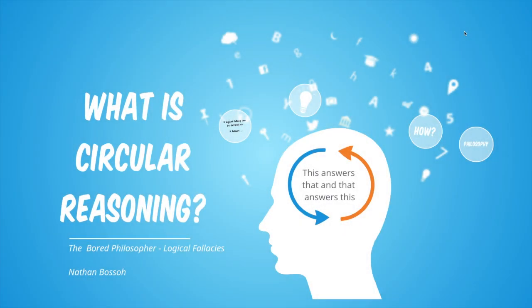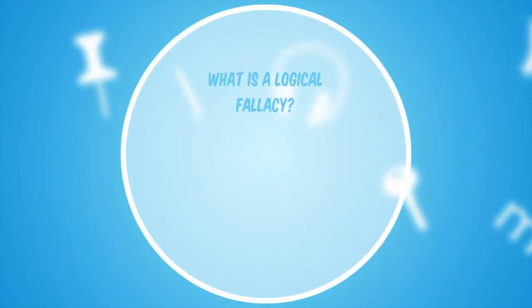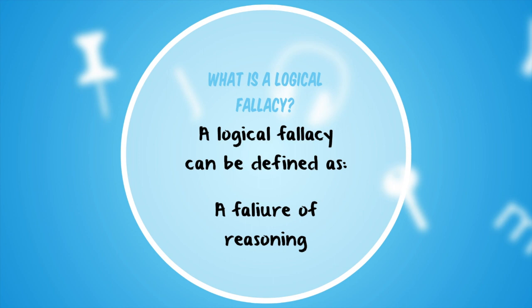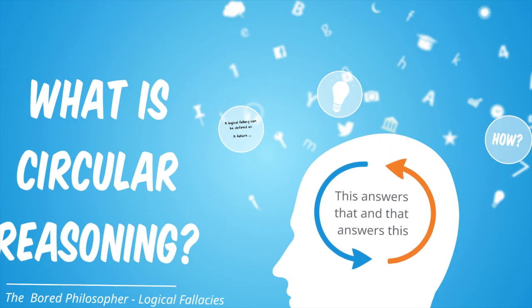What is circular reasoning? Circular reasoning is a type of logical fallacy. What is a logical fallacy? Well, a logical fallacy can be defined essentially as a failure of reasoning. Hence, when we are looking at circular reasoning, we are looking at a type of logical fallacy.